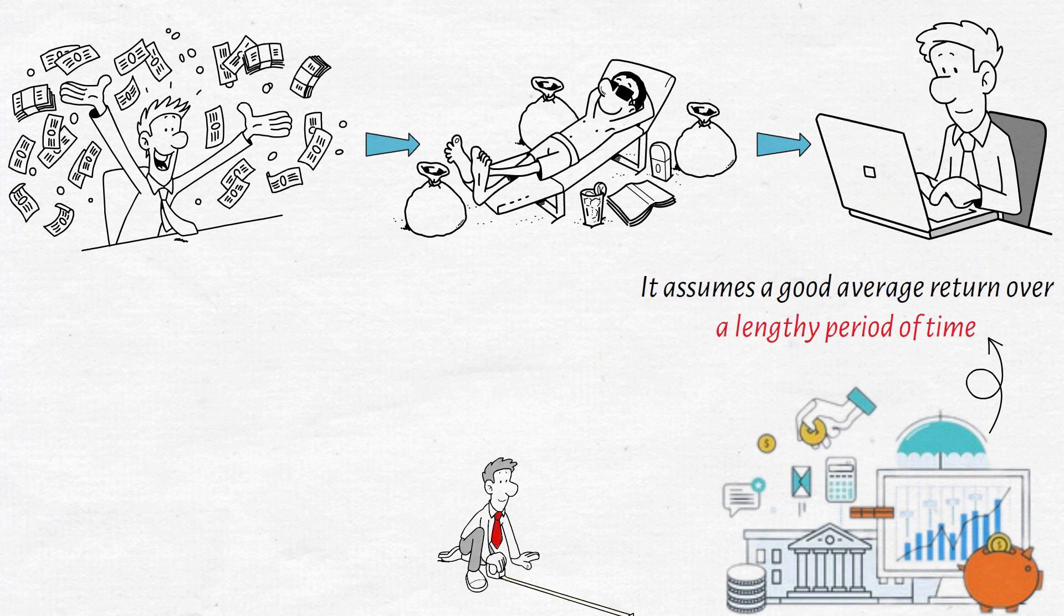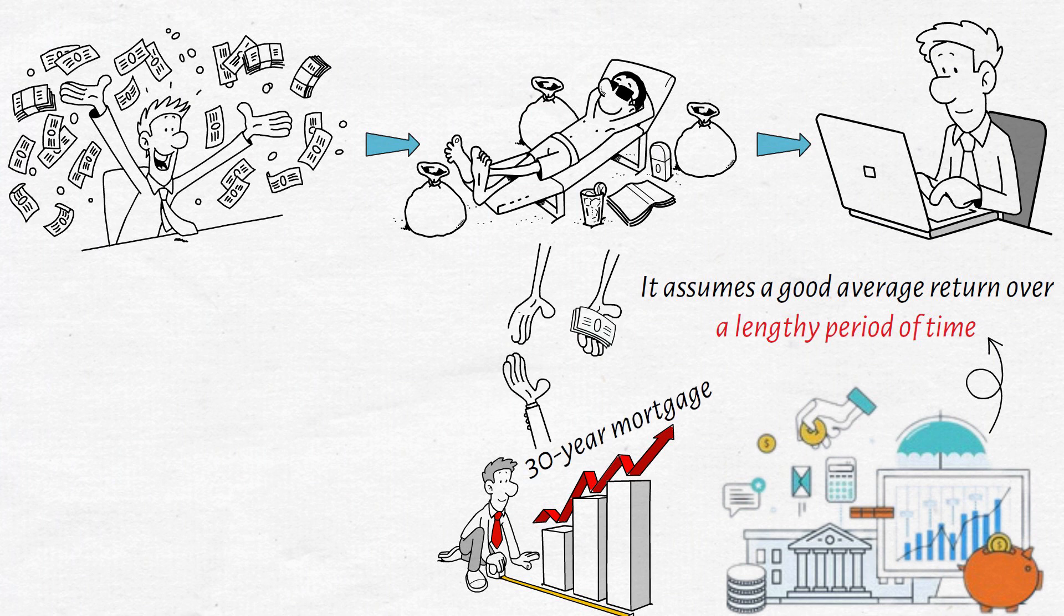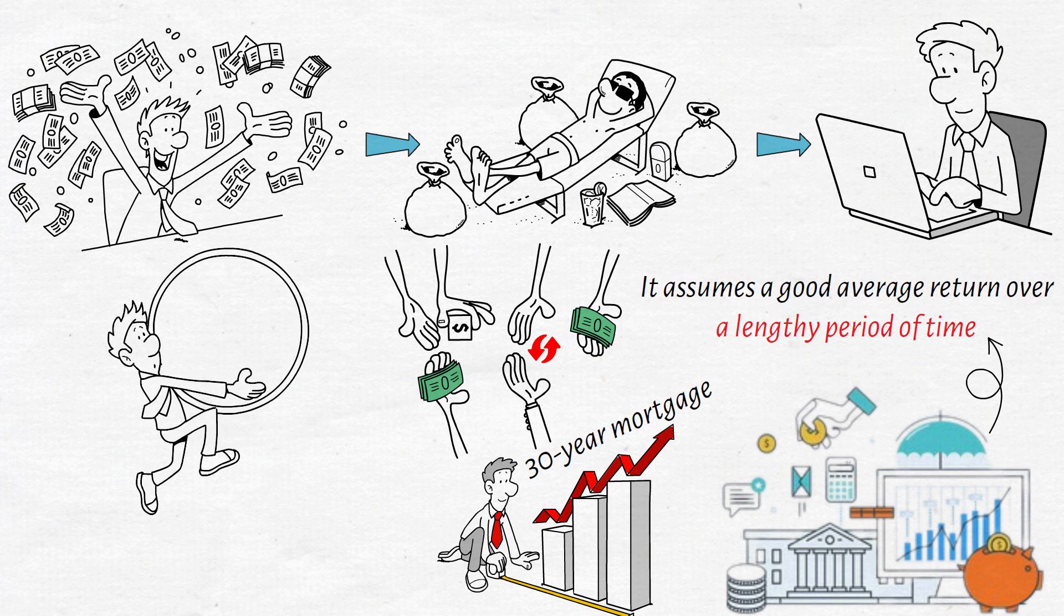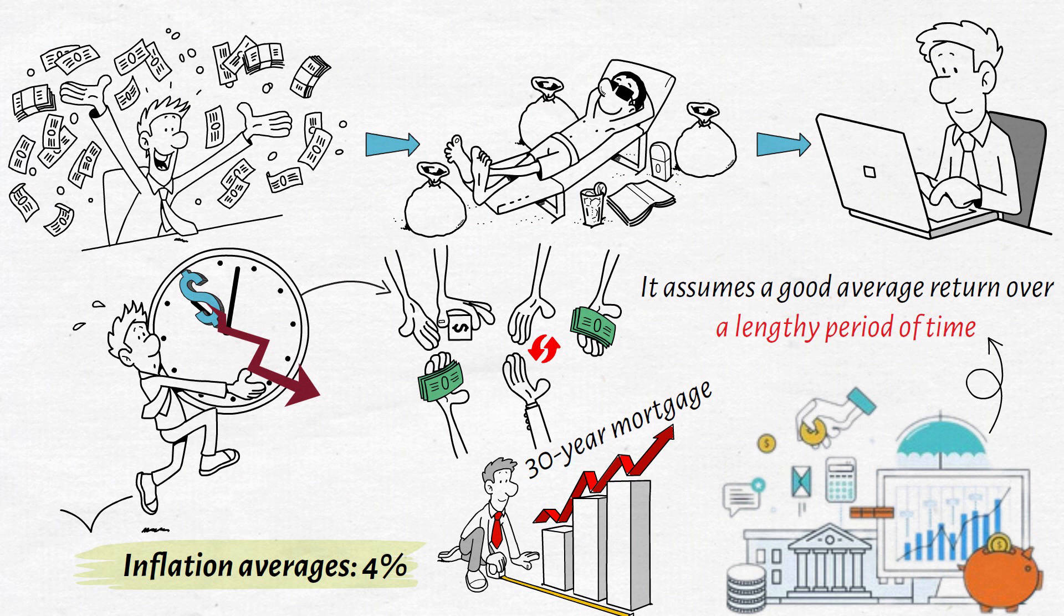Inflation works in your favor when dealing with a 30-year mortgage, because the mortgage payment remains the same dollar amount for the life of the loan, but the dollar loses its value over time, which means you can pay back your loan in dollars that are worth less than they were previously.